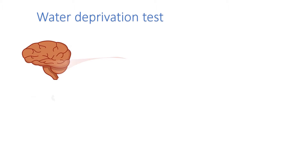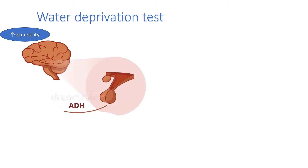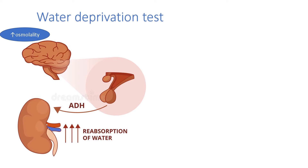The key differentiating feature of all these disorders is the water deprivation test. Normally when you restrict water for about 12 hours, your plasma osmolality rises, stimulating the hypothalamus osmoreceptors, which signal the pituitary to increase ADH. ADH then goes to the kidney and helps reabsorb free water to dilute plasma osmolality.